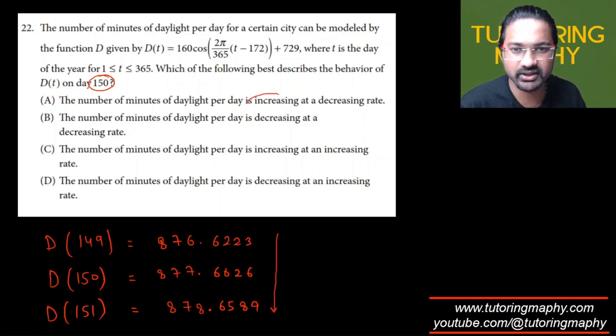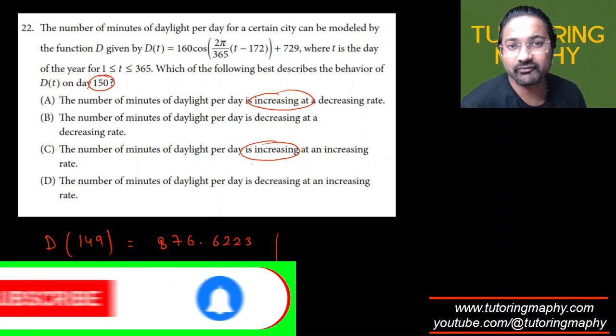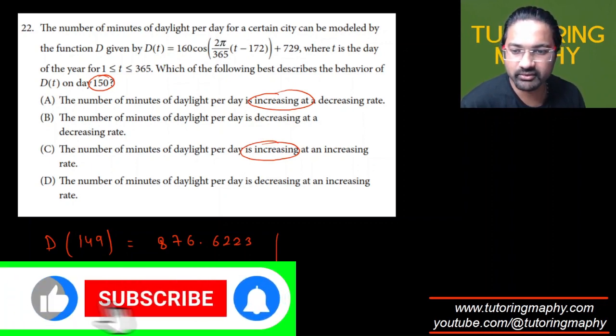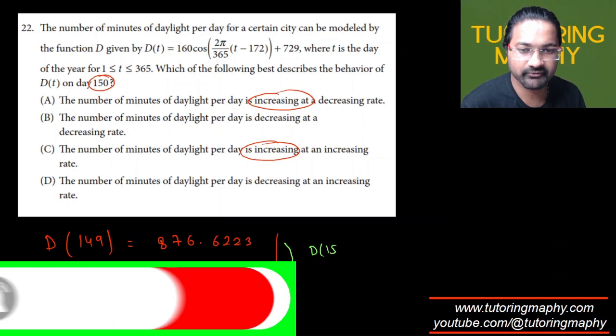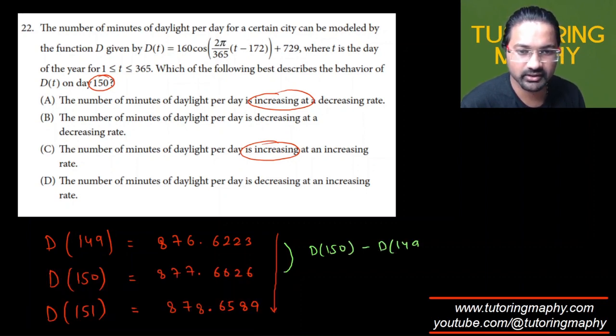Now to find whether the rate is increasing or decreasing, we find the difference of consecutive terms. First we find the difference of 150 minus 149, and this value comes out as 1.0403. Then we find the difference between 151 and 150, and this value comes out as 0.9962.